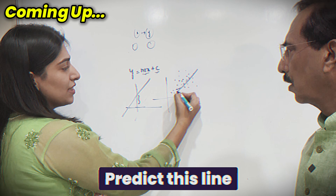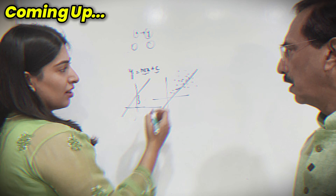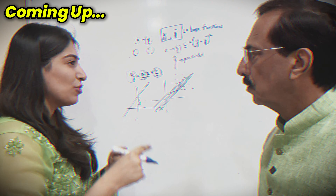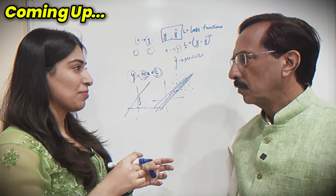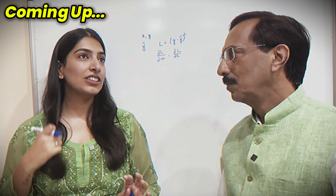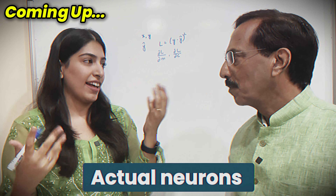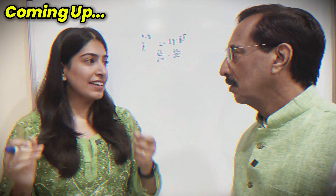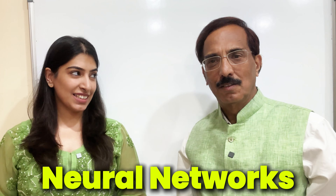I want to predict this line — the best fit line. Whenever we have to minimize something in maths, what do we do? It is not like there are actual neurons. In the end, it is all maths. It's just numbers. Oh my God — Neural Networks!